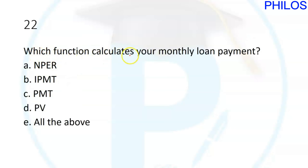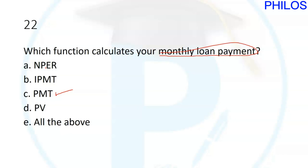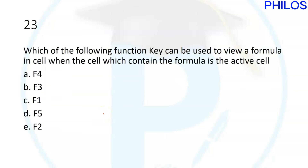Question twenty-two: which function calculates your monthly loan payment? The answer is C: PMT. PMT calculates the monthly loan payment. PV is present value, NPER is the number of periods, and IPMT relates to interest.